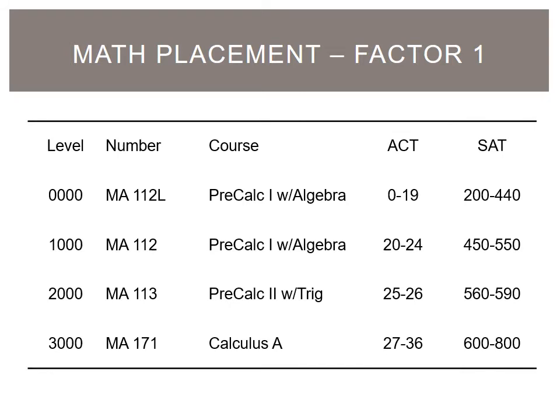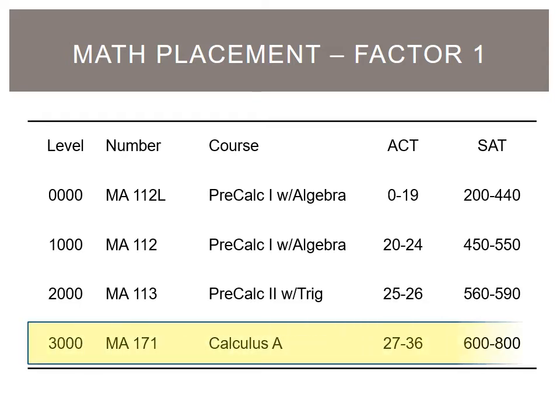This table shows all the possible math placement levels determined by ACT and SAT math subscores, from a level 0 Pre-Calculus with Algebra to a level 3000 Calculus A. If we consider the level 3000 placement, a student needs a minimum ACT math subscore of 27 or a minimum SAT math subscore of 600. Note that you cannot place higher than MA 171 using your test scores.